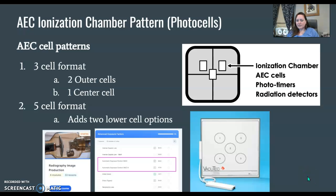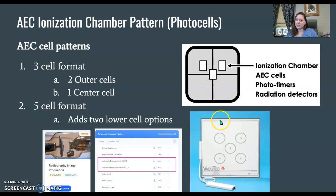The photo cells — which is an old term, we're using ionization chambers now — is something you might also see or hear techs at a facility call them. If you look on the outside of your bucky, it's either going to be a three-cell format or a five-cell format. Most older machines only have three — a two-outer, one-center-cell setup, which is the most common. Some newer machines have a five-cell option: two outer upper ones, two lower, and then still a center cell.